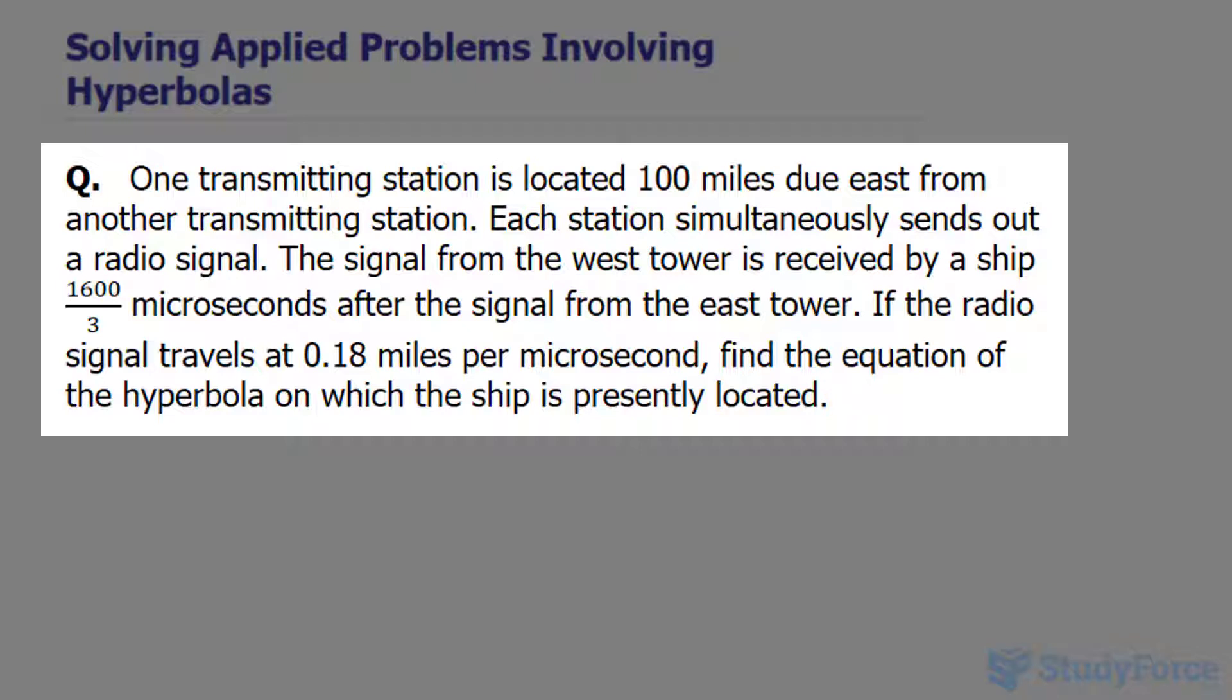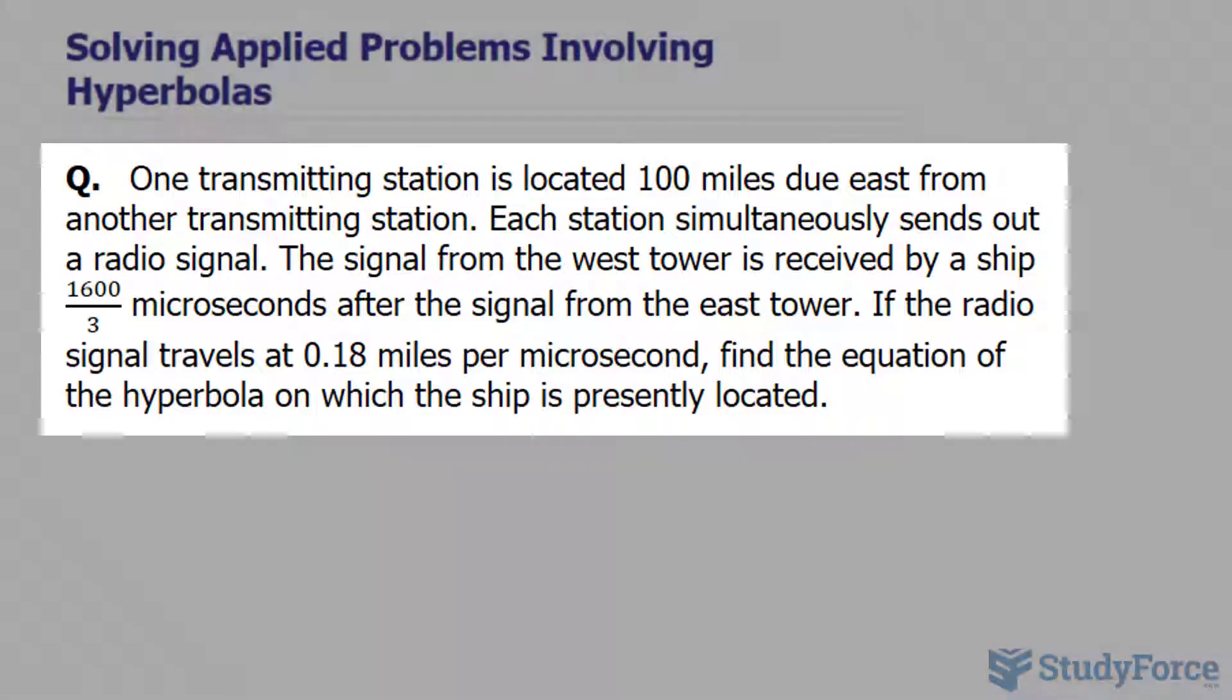The signal from the west tower is received by a ship 1,600 over 3 microseconds after the signal from the east tower. If the radio signal travels at 0.18 miles per microsecond, find the equation of the hyperbola on which the ship is presently located.